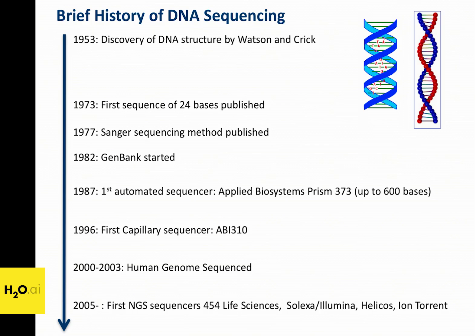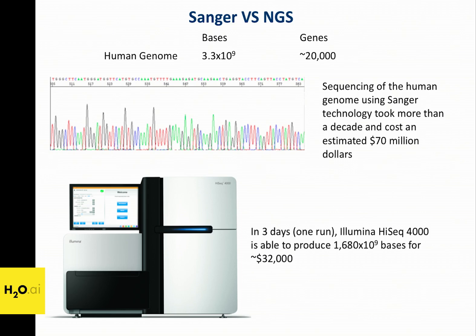This was a game changer. From that point to now, different technologies and methods have appeared. This was a big change in the sense that the length of sequences are not even longer — some technologies give us just 100 bases — but they allow us to do massive parallel sequencing. The human genome is 3 billion bases. For the Human Genome Project, it took over a decade and around $70 million to sequence it.